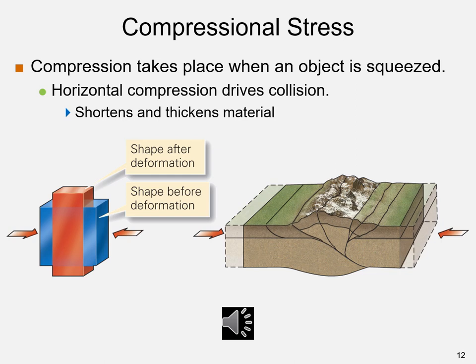On the left, we see a cube labeled 'shape before deformation' and a rectangular prism labeled 'shape after deformation.' The longest length of the rectangular prism is its height. The strain is the linear shortening caused by the stress. The second part of the diagram shows horizontal compression with a part of the Earth's crust driving collision and creating mountains.